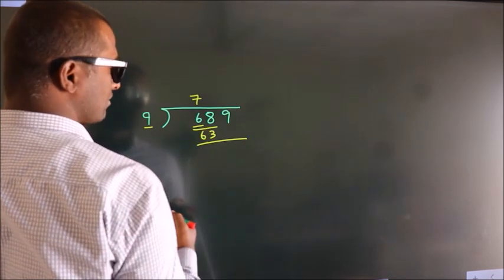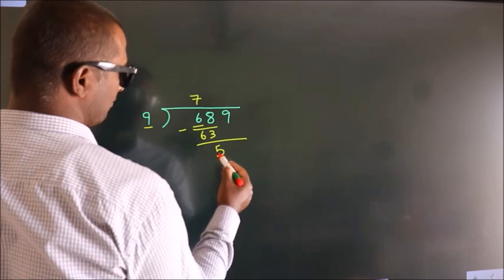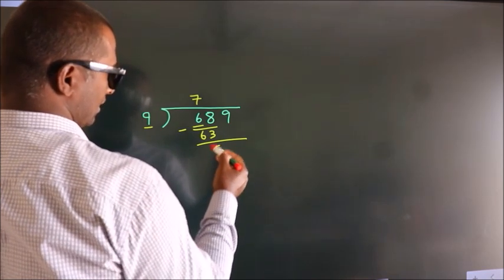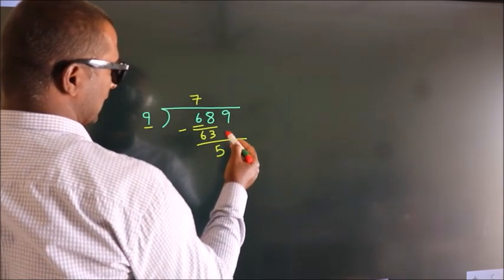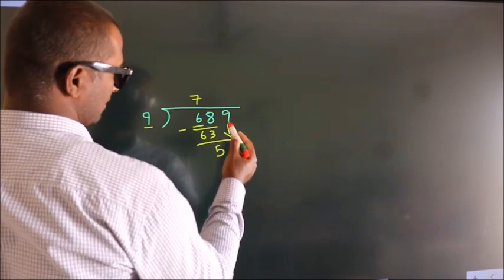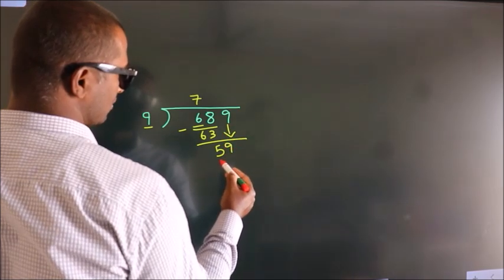Now we should subtract, we get 5. After this, bring down the next number, so 9 down, giving us 59.